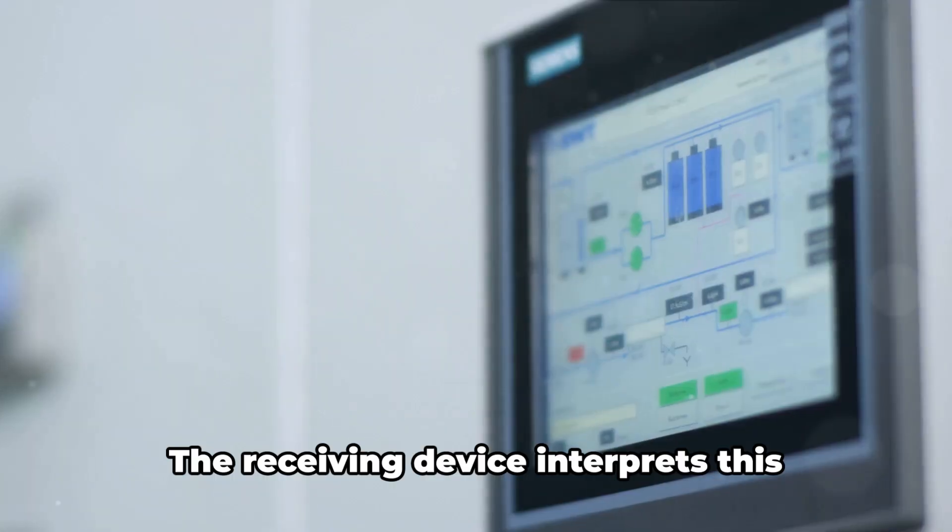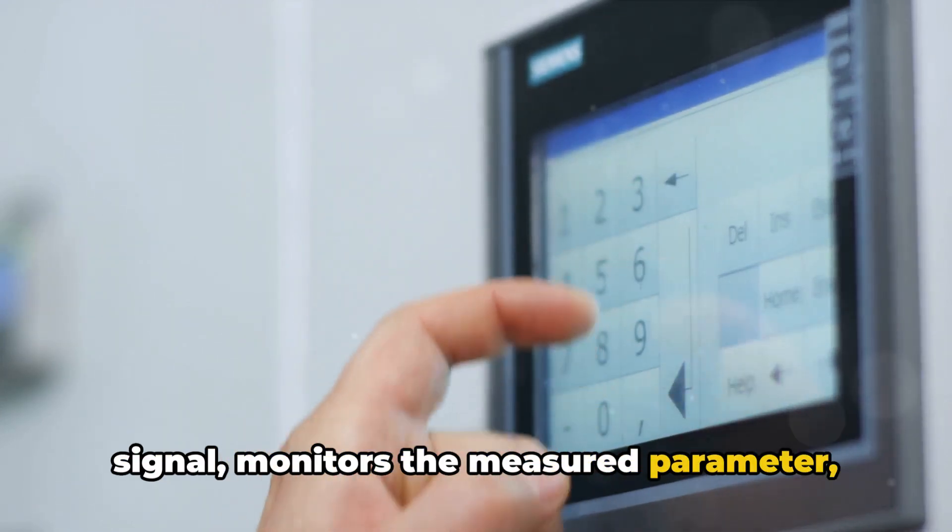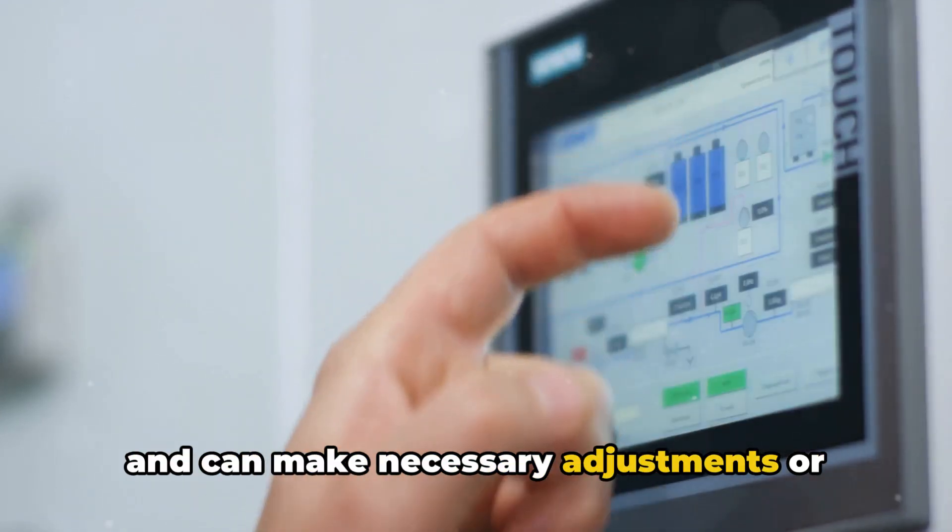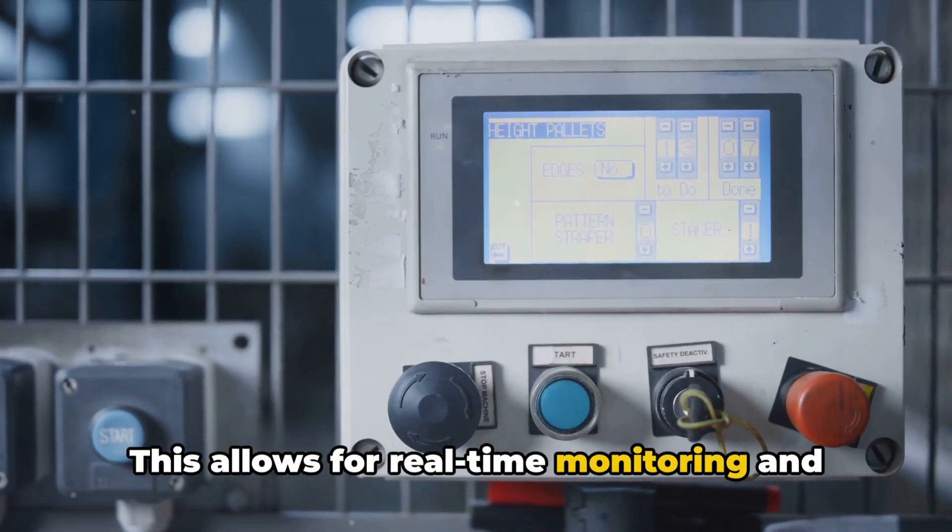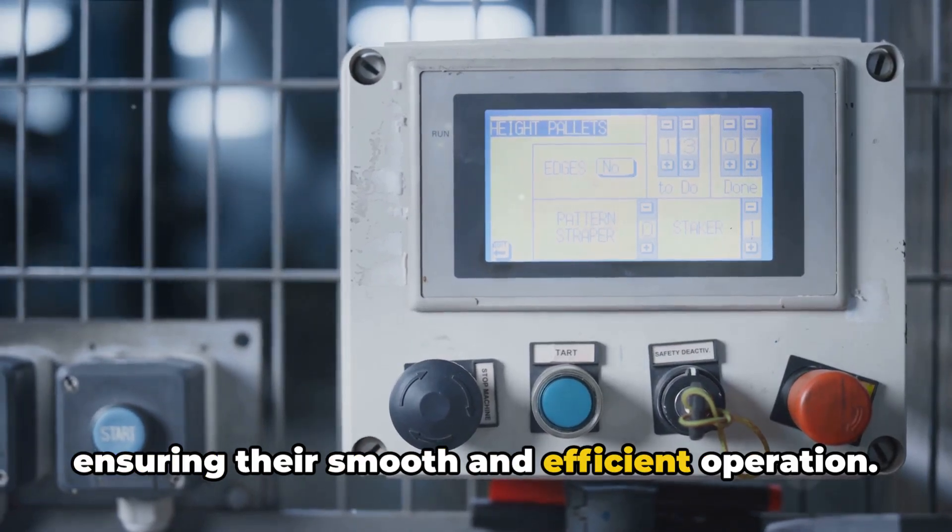This is where the magic happens. The receiving device interprets this signal, monitors the measured parameter, and can make necessary adjustments or control actions. This allows for real-time monitoring and control of various industrial processes, ensuring their smooth and efficient operation.